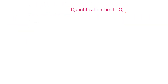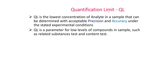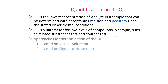Quantitation Limit (QL) is the lowest concentration of analyte in a sample that can be determined with acceptable precision and accuracy under the stated experimental conditions. QL is a parameter for low-level compounds in samples, such as degradation product transfer tests and content tests.